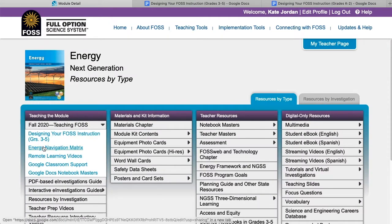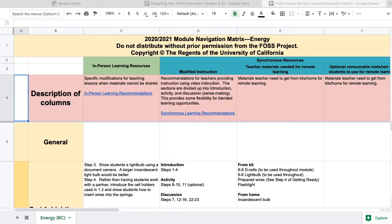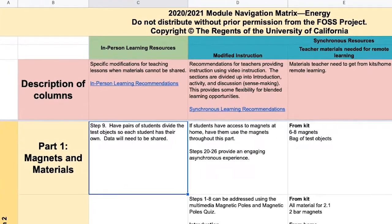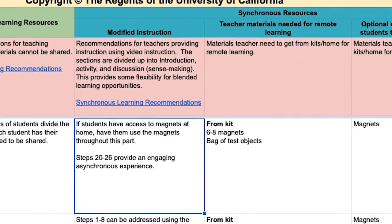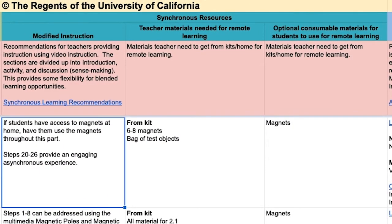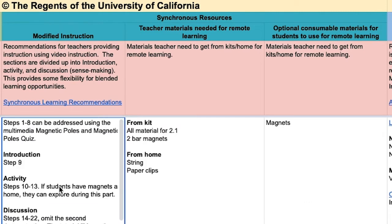The next resource in the Fall 2020 Teaching FOSS node is the Navigation Matrix, a living document that is frequently updated and the crux of the FOSS Fall 2020 teaching resources. The first column of suggestions is for in-person learning, where you may need to rethink materials use to maintain physical distancing. The middle three columns provide information for synchronous learning, though some suggestions may also be used for asynchronous learning. The column titled Modified Instruction will point out modifications to the Investigations Guide, often showing modifications to the introduction, activity, and discussion. Some of these steps can be done asynchronously.